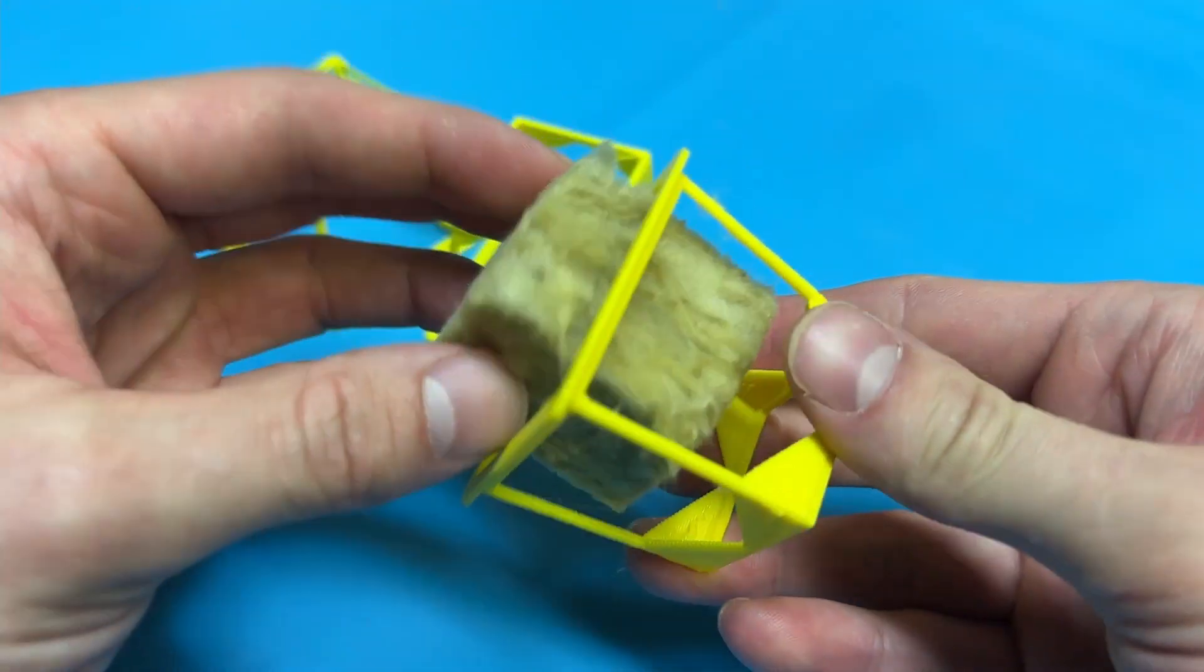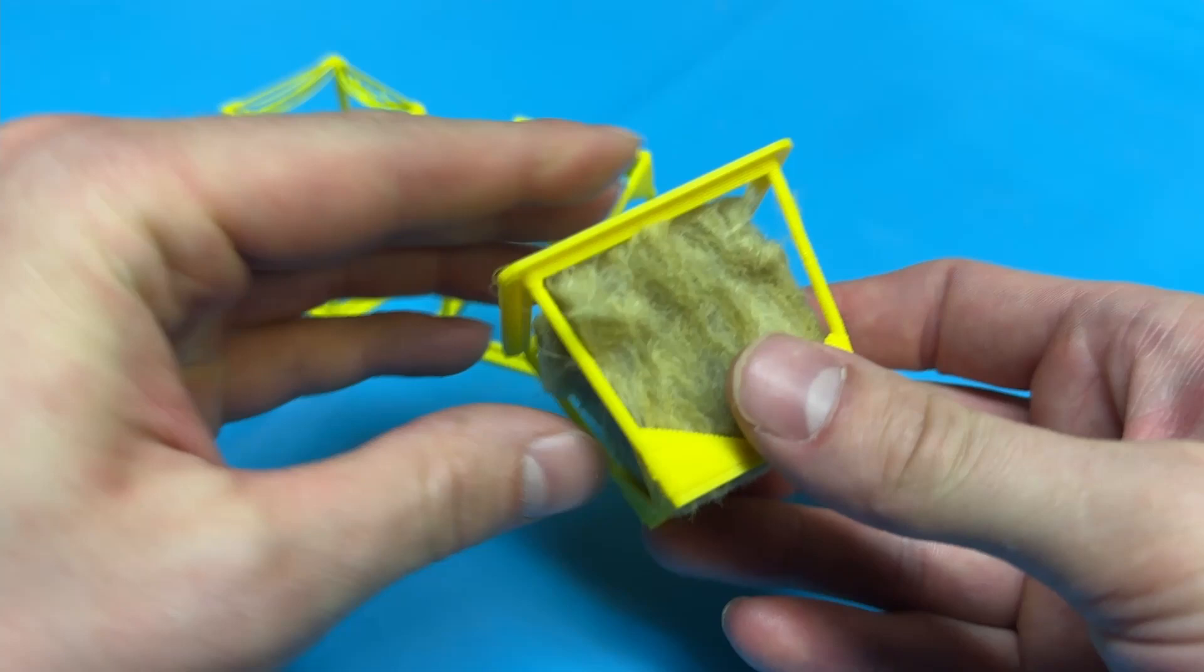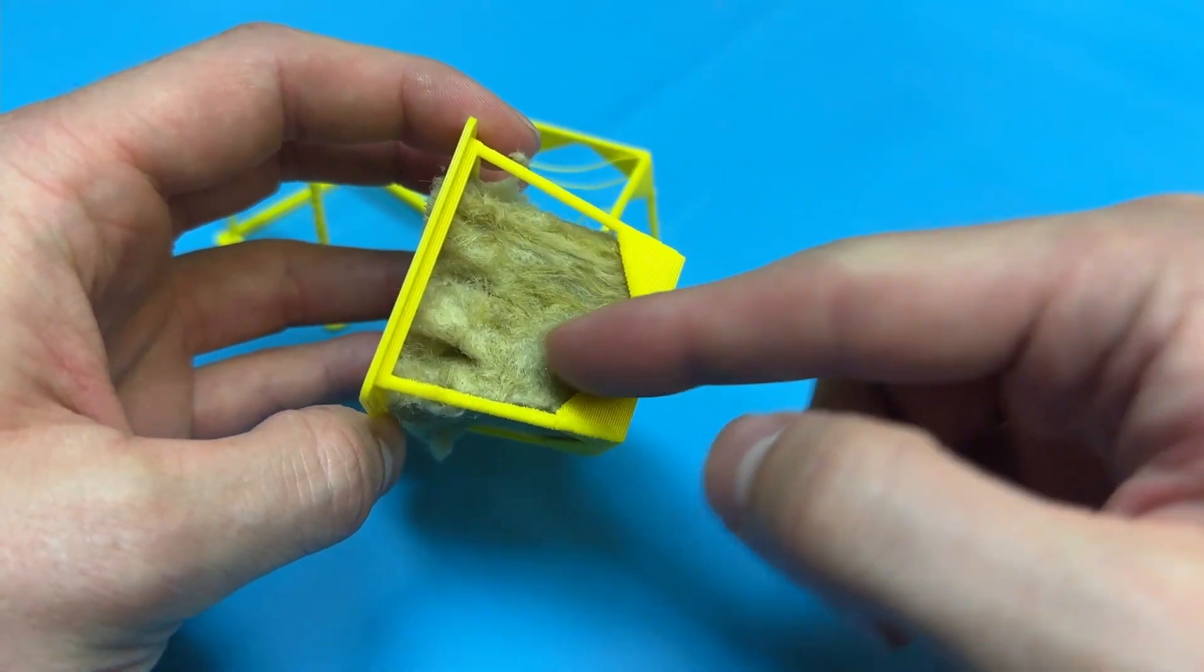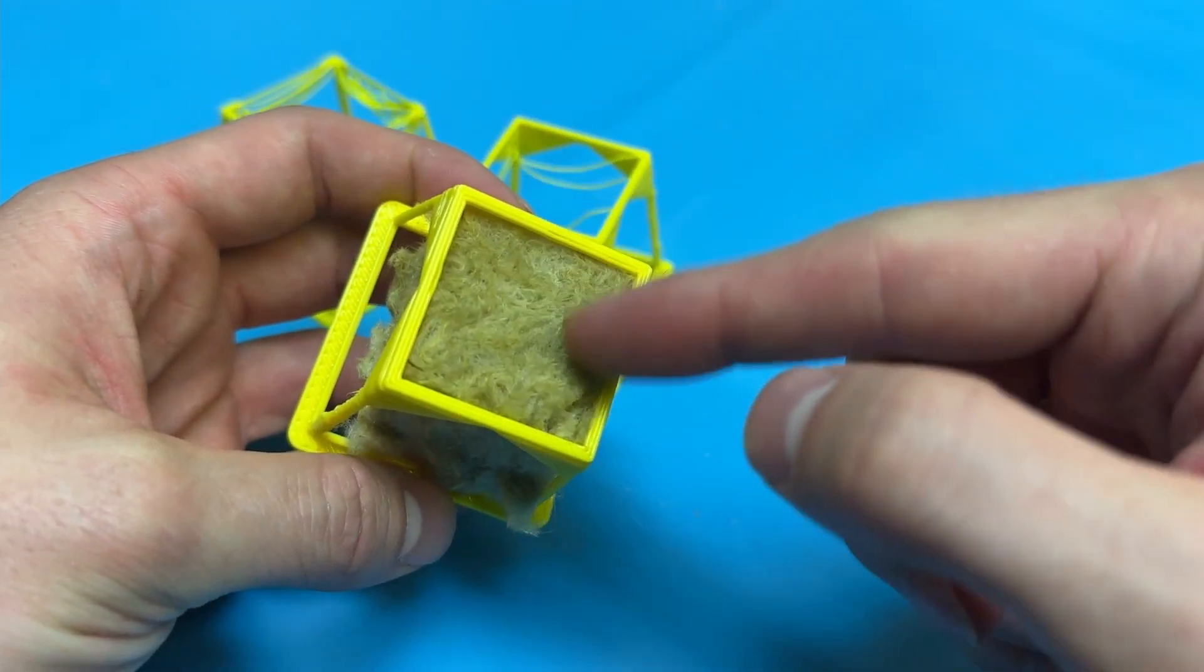And that it can hold these Rockwool cubes and they have a nice amount of space for the roots to come out the sides and the bottom.